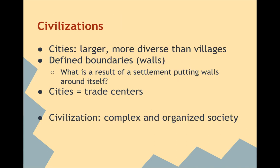So what is a civilization? We start to see cities — they're larger and more diverse than small villages. They have defined boundaries, predominantly walls, in order to keep out attackers. Cities are also going to be trade centers, where we see people coming in with the seasons to hawk their wares and trade their surpluses for other goods.